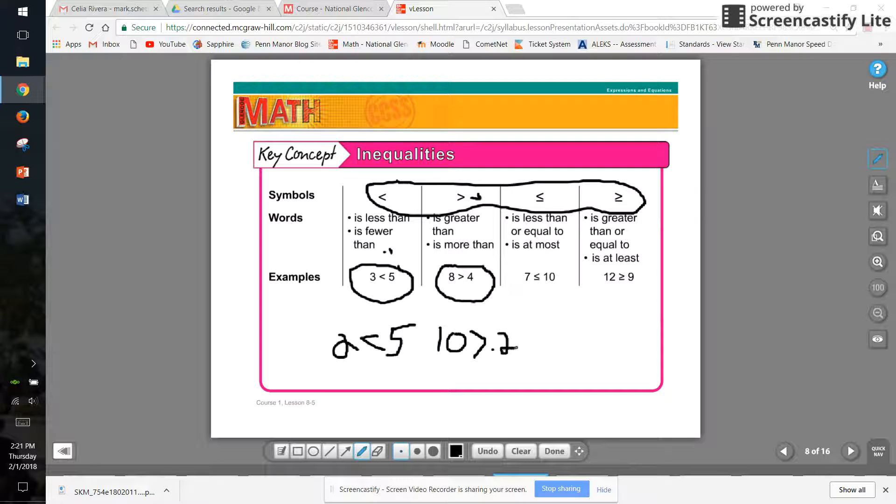New territory for sixth graders. We discussed this teeny tiny change at the bottom here of this symbol. I'm working on the third column. It says less than or equal to. And that's what that little line underneath means. So right here in our example, seven is less than or equal to ten. Makes sense because seven is less than ten.